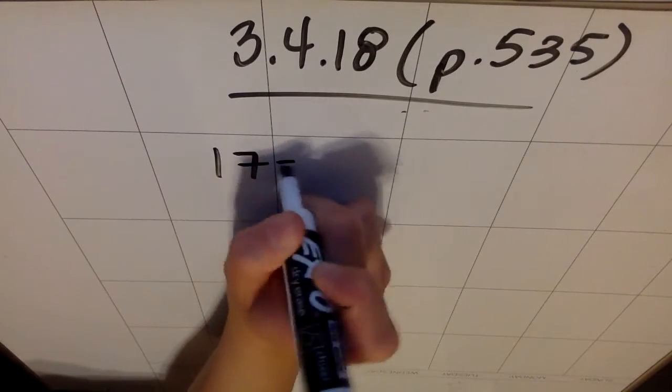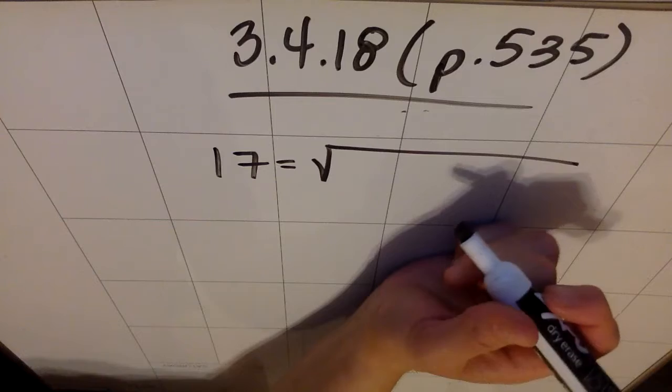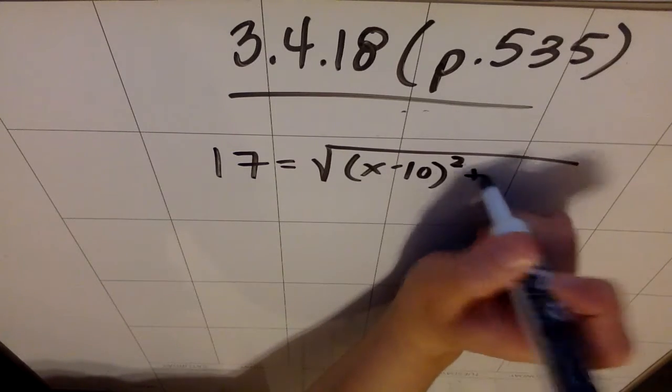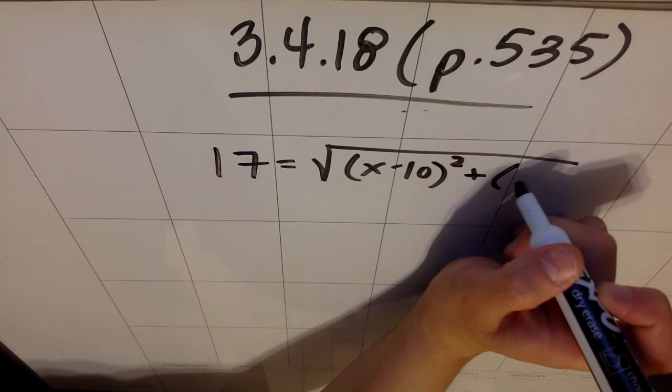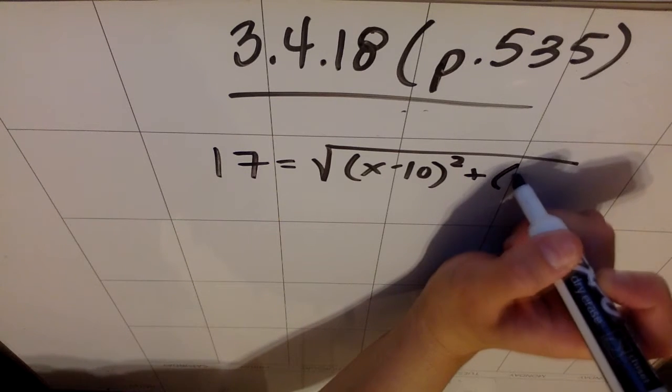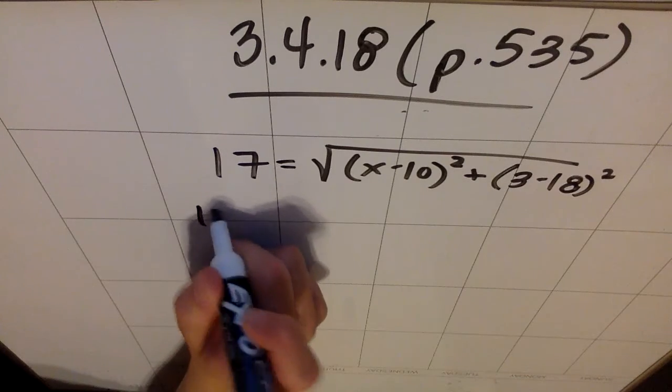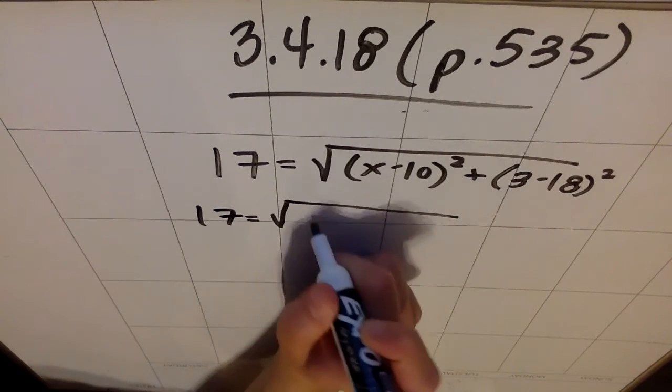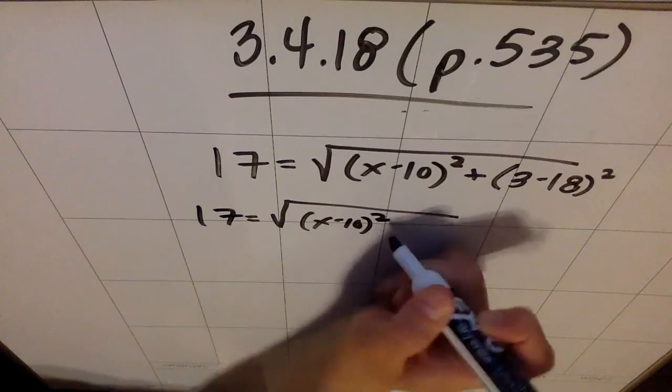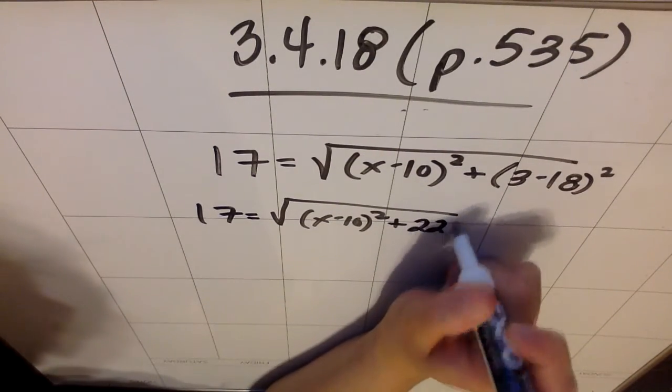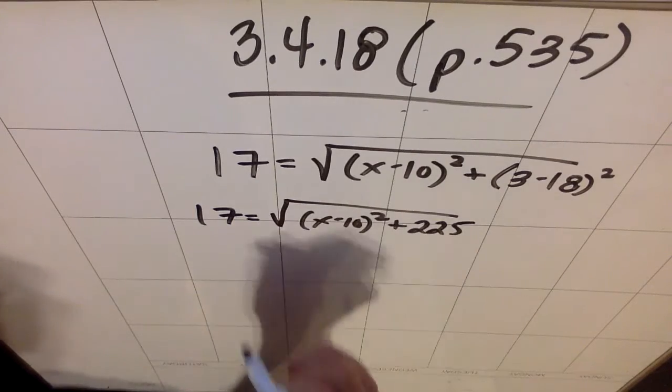So, we know the distance is 17, and we know it's the square root of the x minus the other x value, so that would be (x - 10)², plus the y minus the y value, so I did (3 - 18)². So 17 equals the square root of (x - 10)² plus this ends up being negative 15 squared, but you could just go ahead and make it 225.